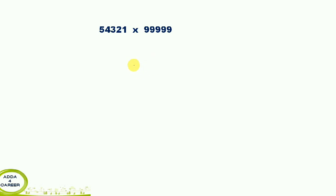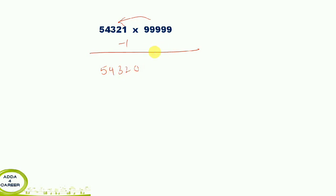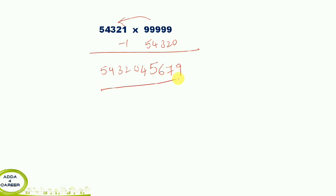Next example: 54321 into 99999. This is 5 digits. First, subtract 1: 54321 minus 1 is 54320. Now find the complement of 54320 from 99999: 9 minus 5 is 4, 9 minus 4 is 5, 9 minus 3 is 6, 9 minus 2 is 7, 9 minus 0 is 9. So the answer is 5432045679. That's how we do case 1.